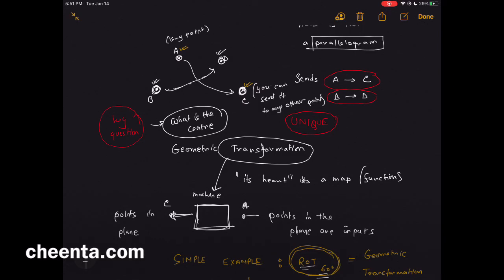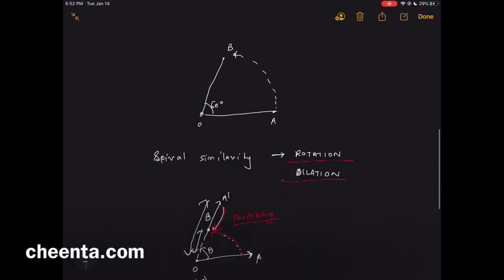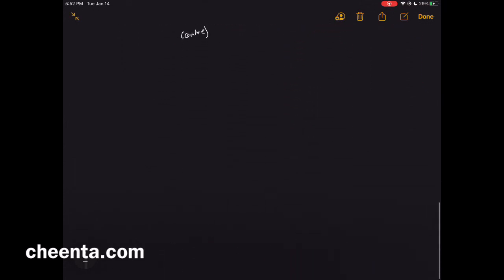What we are claiming here is that there is a spiral similarity that sends A to C and B to D. Now to discover that spiral similarity, we have to find out the center of that spiral similarity, and of course the angle and the dilation coefficient. So how much we are shrinking or expanding, we need that as well. So let's first find the center of spiral similarity.